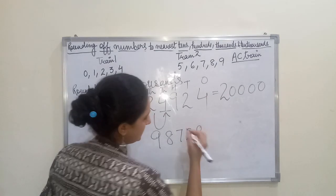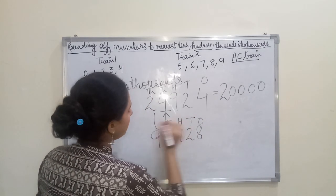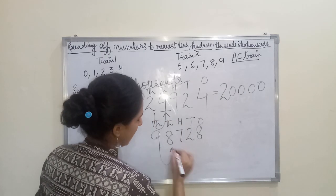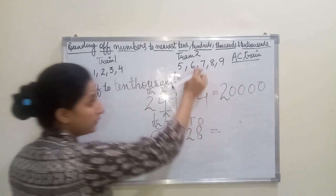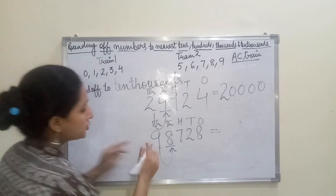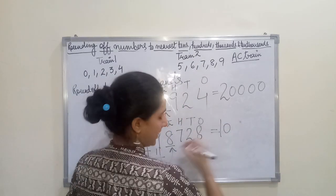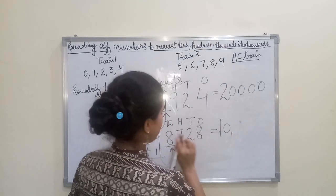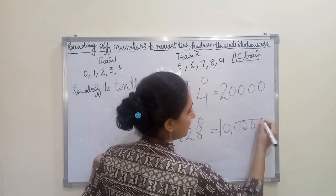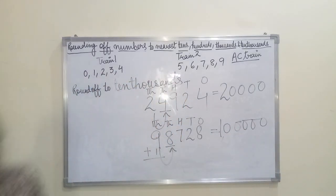Let's take one more example: 98726. Write down ones, tens, hundreds, thousands, ten thousands. Mark the previous digit — eight. It belongs to Train Two, the AC train. So one is added to the ten thousands place: nine becomes ten. With the remaining digits — one, two, three, four — it becomes one lakh.